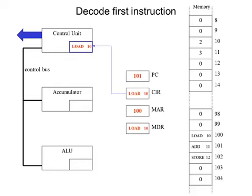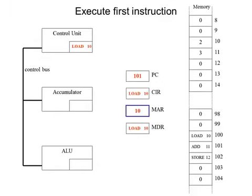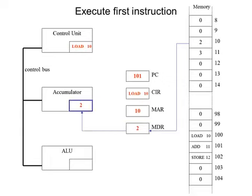Now we can decode the instruction. Without going into detail, the control unit comes into play and it opens various pathways. The next stage in the process is to execute that instruction. The instruction is LOAD 10 — in other words, load the contents of memory address 10. So memory address location 10 now goes into the memory address register. Then we can take the contents of memory location 10 and place that into the memory data register, overwriting its previous contents. And then the contents of that memory address can be placed into the accumulator. That's the first instruction executed.